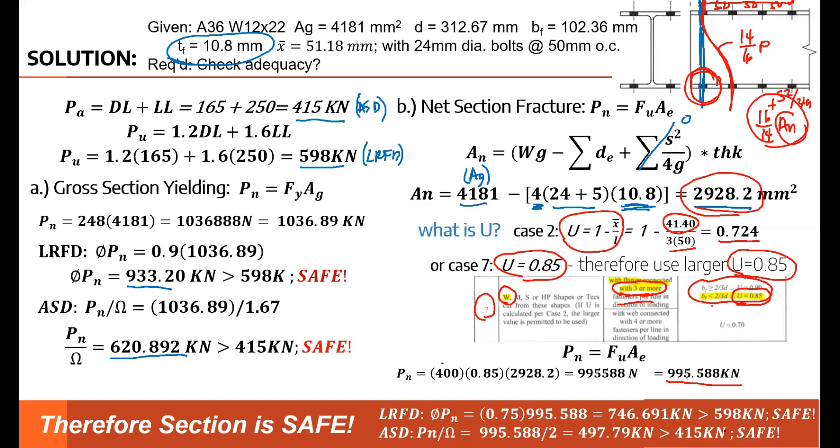In computing capital U, this could be an exam question: Can you solve for the shear lag factor considering Case 2? Yes, the answer should be 0.724. What is the shear lag factor considering Case 7 on the table? The answer is 0.85. But if you consider both Cases 2 and 7, you just have to choose whichever is larger. So 0.85 governs.